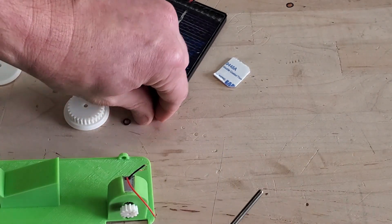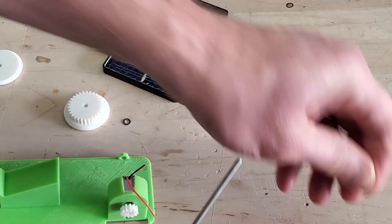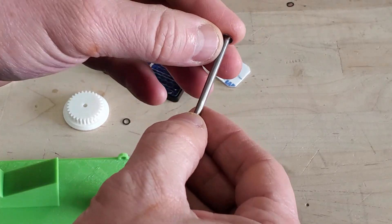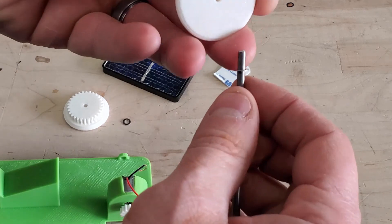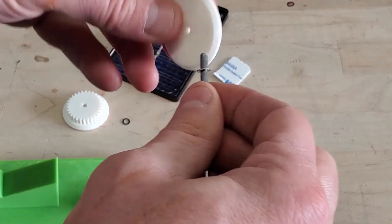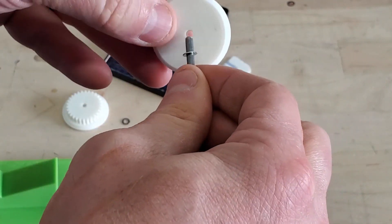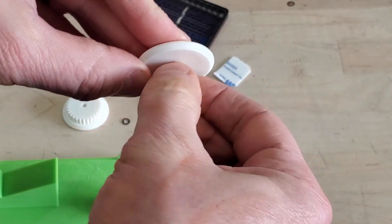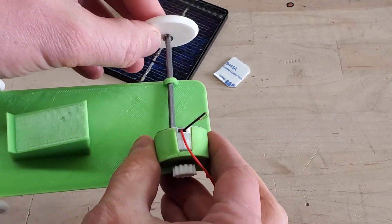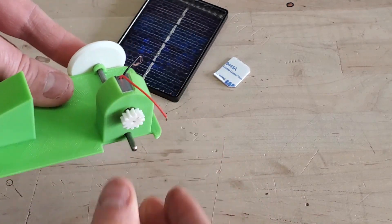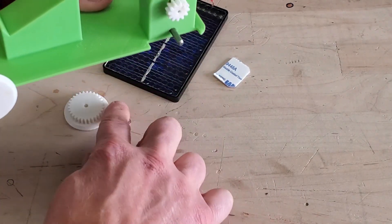Again, grab an axle and washer, slide the washer over the axle, and put your first wheel on. Then slide your axle through the holes and grab another washer. Slide it over the axle.